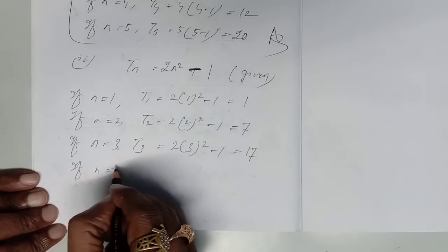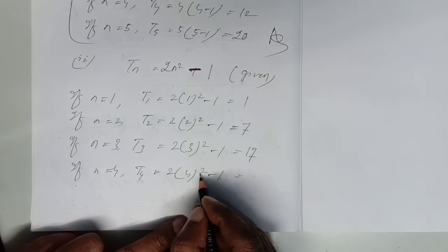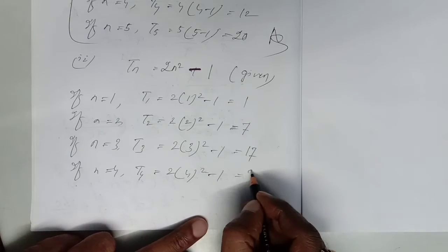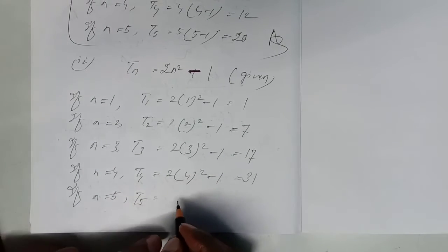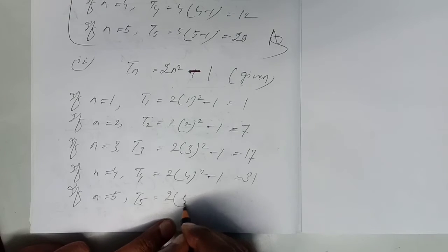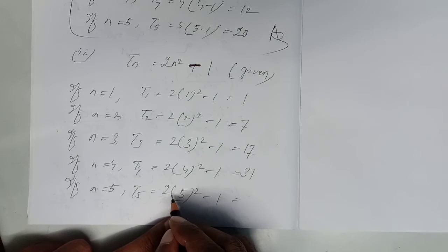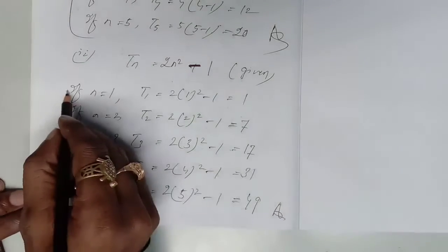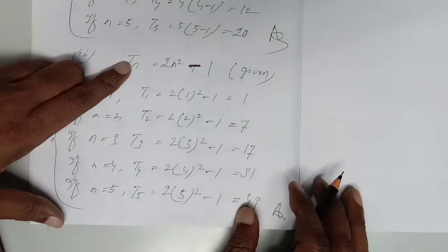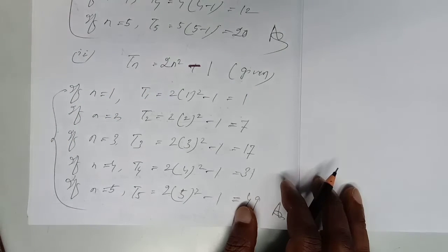If n equal to 4: T4 = 2(4)² − 1 = 2 × 16 − 1 = 32 − 1 = 31. Next, if n equal to 5: T5 = 2(5)² − 1 = 2 × 25 − 1 = 50 − 1 = 49. This is the way of finding the first 5 terms of the given sequence where the nth term is 2n² − 1.